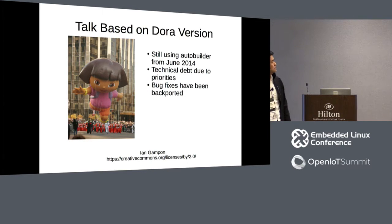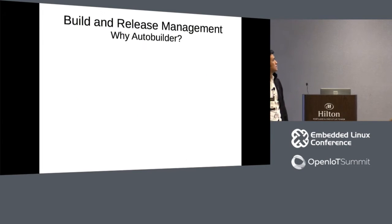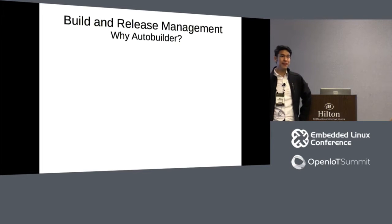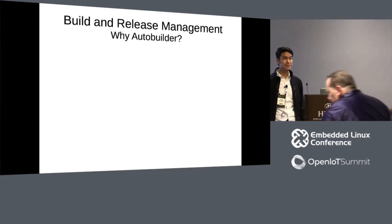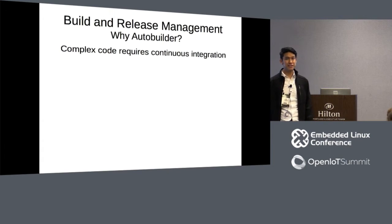Basically, if we find a bug that's been fixed upstream, we pull it back. So, build and release management in general — why do you need something like the AutoBuilder? It's just because of the complexity of the code.